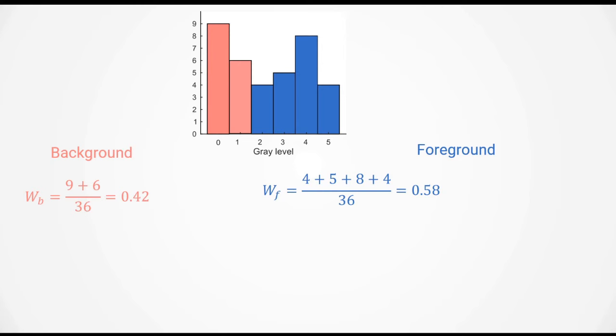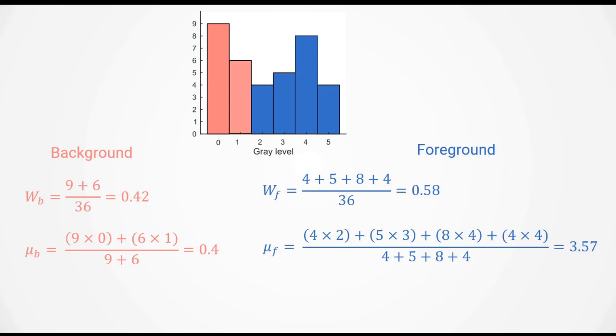We can now compute the average intensities mu_b and mu_f. These are obtained by taking the height of each bar in the histogram multiplied by the gray level it corresponds to. For example, mu_b equals 9 times 0 plus 6 times 1 divided by 9 plus 6, giving us 0.4. For mu_f, the mean intensity in the foreground, it gives us 3.57.